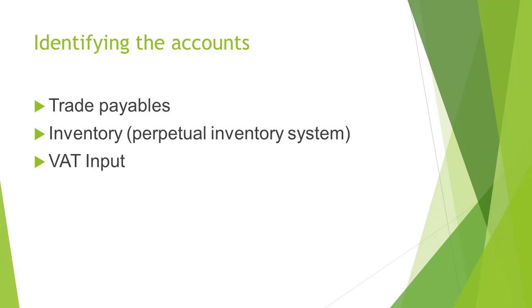The first step when we want to record a transaction is to identify the affected accounts. In this transaction, the first affected account is trade payables, since the inventory was purchased on credit. The second account will be inventory, since this business makes use of the perpetual inventory system. We can also see that the business is a registered VAT vendor. Therefore, the VAT input account will also be affected, because we can claim the VAT on the purchase back from the South African Revenue Services.